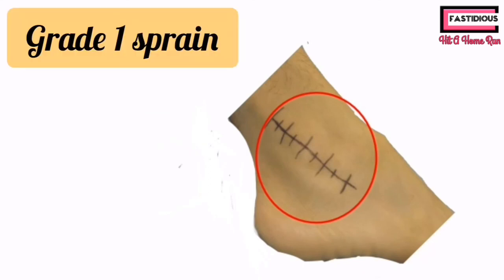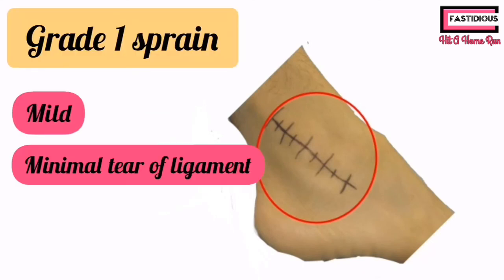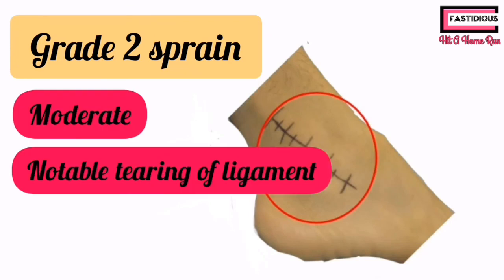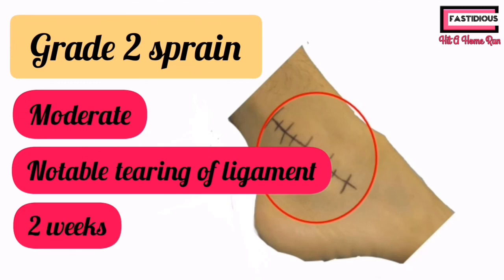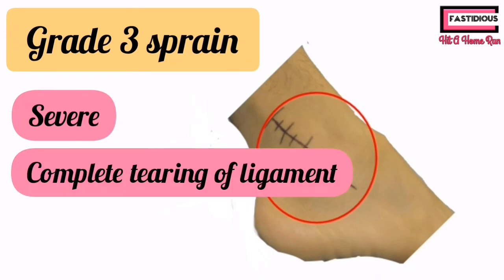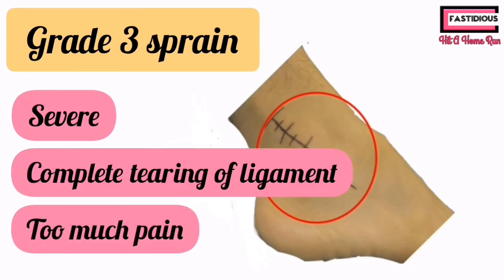Grade 1 sprain is mild, with minimal tearing of the ligament, and the patient successfully recovers in about one day. Grade 2 sprain is moderate with notable tearing of the ligament, and the patient takes about two weeks to recover, though duration varies from patient to patient. Grade 3 sprain is the most severe, with complete tearing of the ligament, causing severe pain, swelling, and bruising, and it requires surgery.